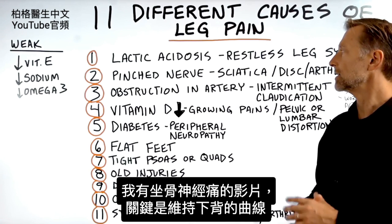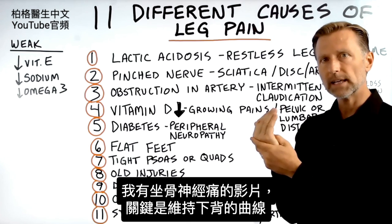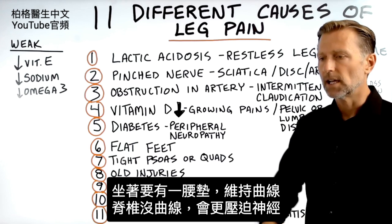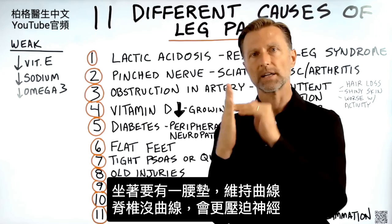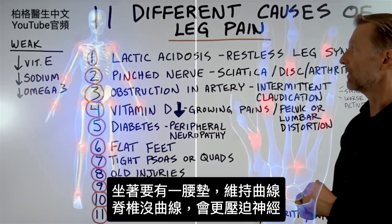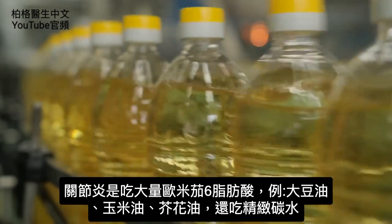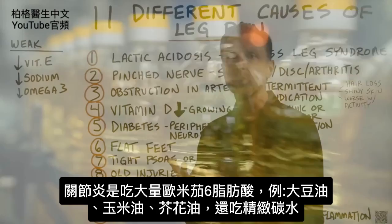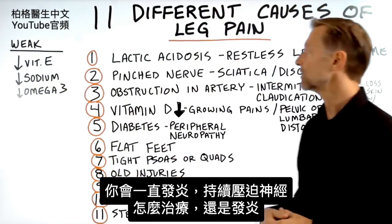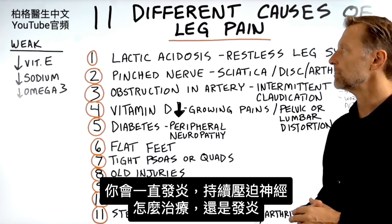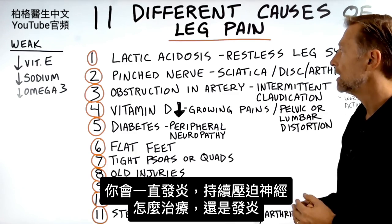I have videos on sciatica. The key is keeping the lower back curve in — you need a little cushion when you sit down to maintain that inward curve, because when you lose the curve you get more compression and that pinches the nerves. With arthritis, consuming a lot of omega-6 fatty acids — soy oil, corn oil, canola — as well as refined carbs, will keep you in a constant inflamed state that keeps the nerve pinched regardless of treatment.